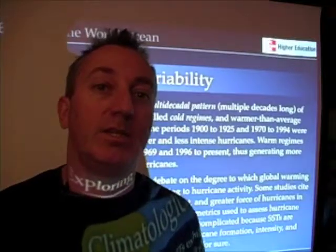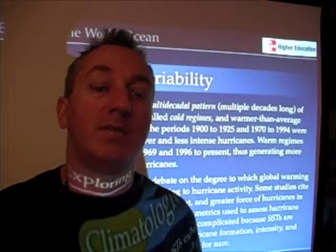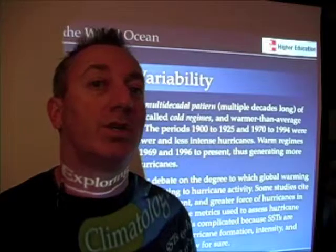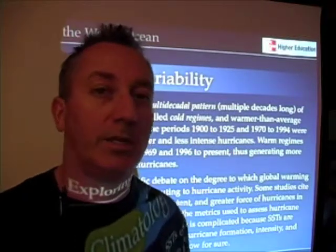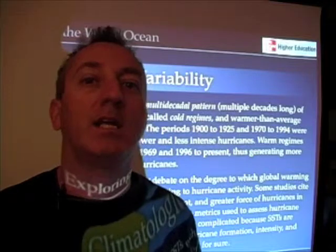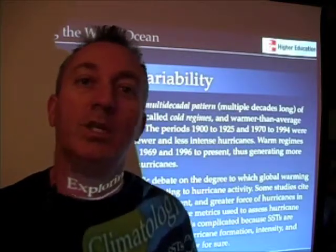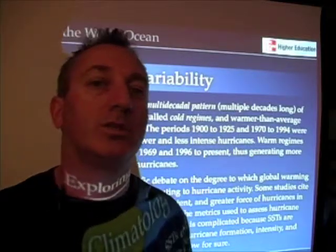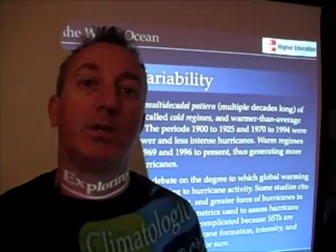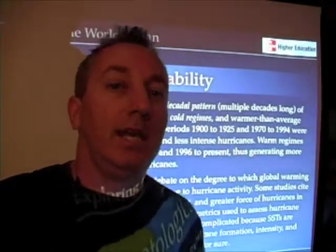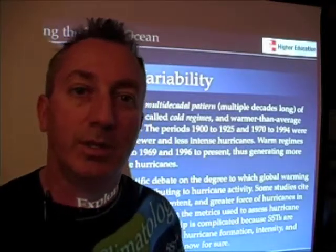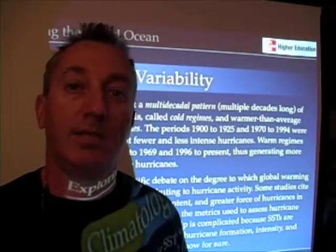What affects hurricanes is the differences in sea surface temperatures that occur over longer time scales, on the order of decades. There is a climatological variability to the North Atlantic Ocean, just like there's a climatological variability that occurs in the Pacific Ocean, that enhances hurricane formation during certain periods of time, or certain decades, versus others.